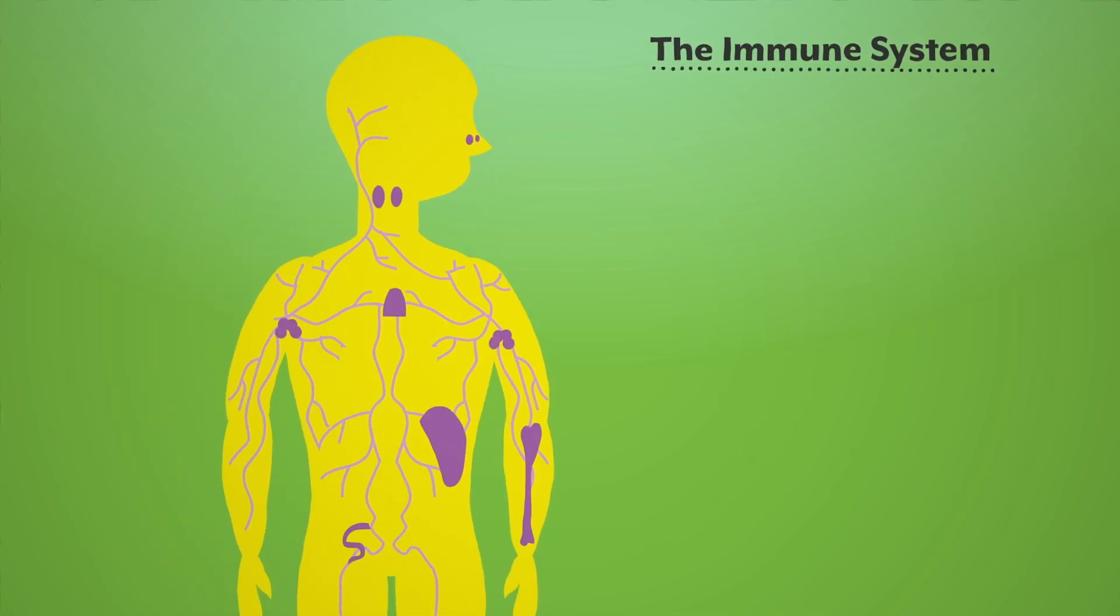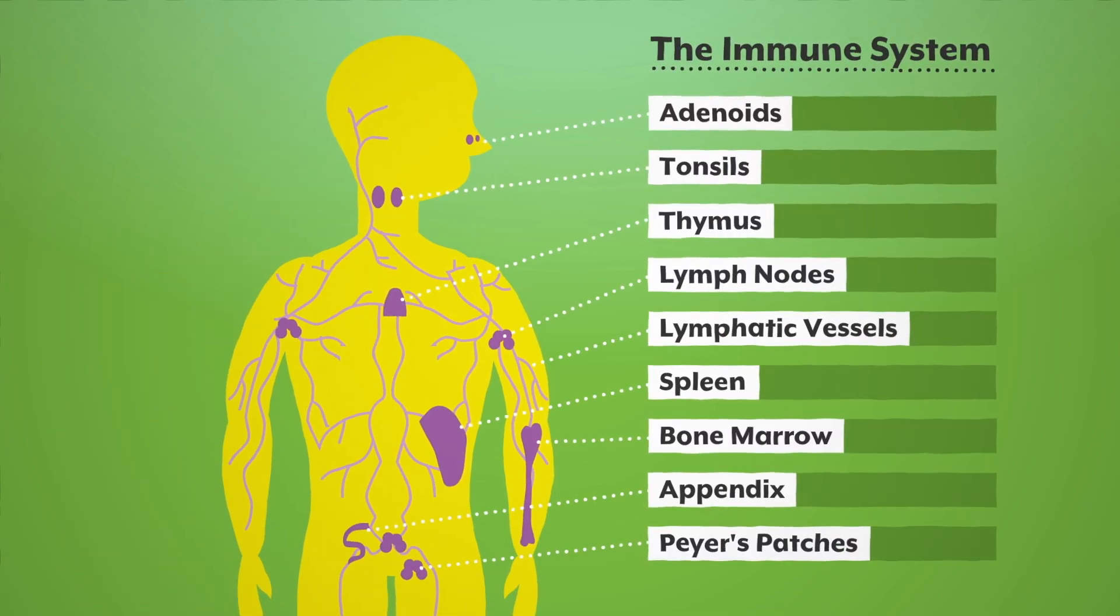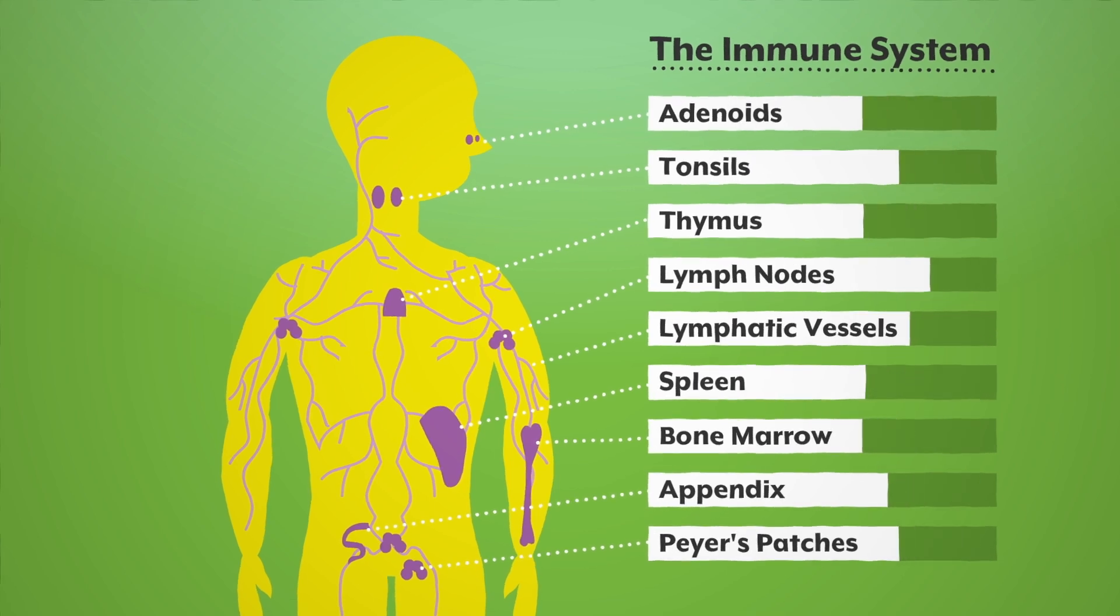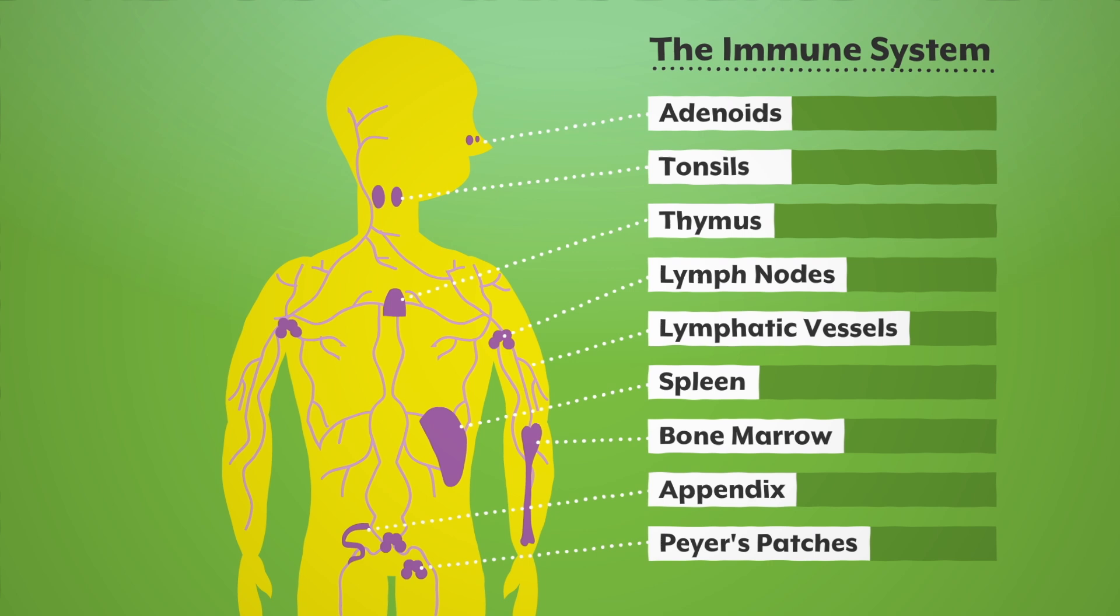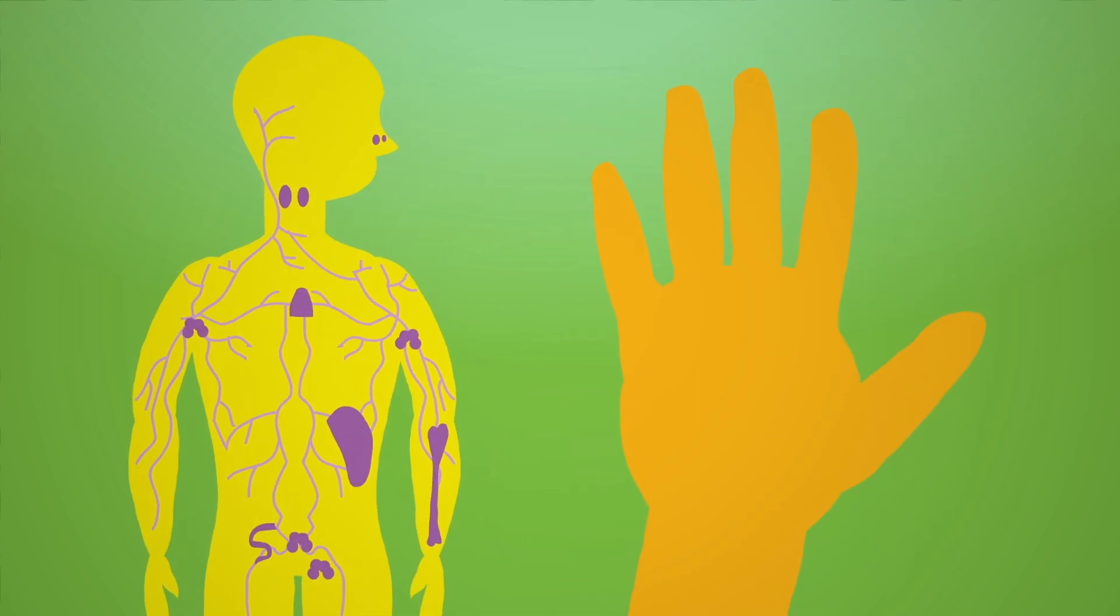Cortisol also interacts with the immune system in complex ways. Depending on the situation, it can increase or decrease certain immune functions. In the process of fighting infection, the immune system often creates inflammation.